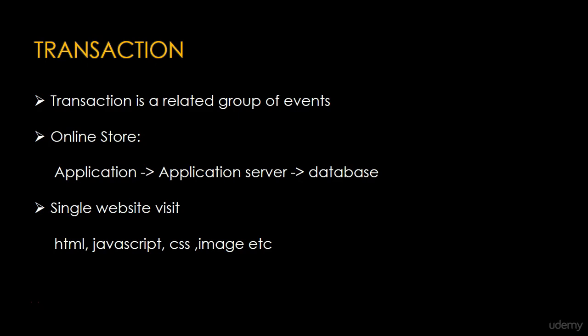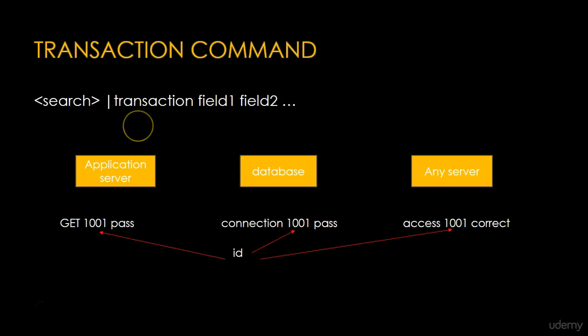Another example is a single website visit. When anyone clicks on any website, it takes HTML code, JavaScript code, CSS files, images, etc. So in a single click, it takes different components. This is called one kind of transaction.